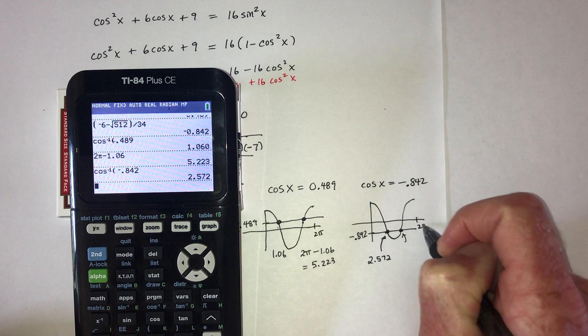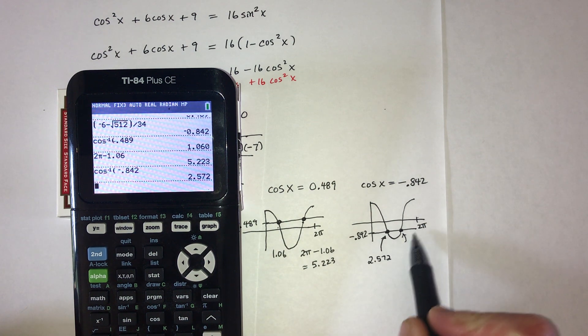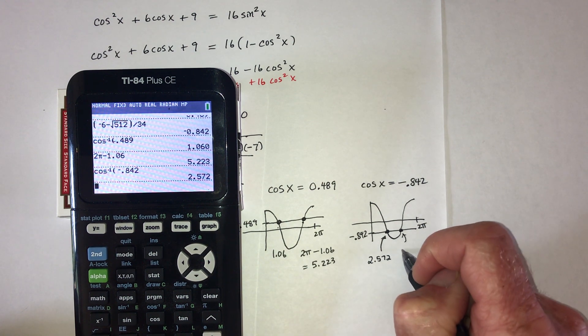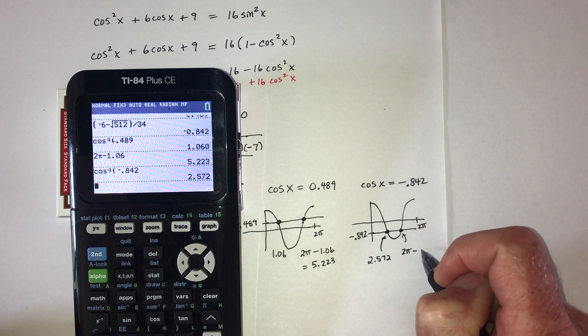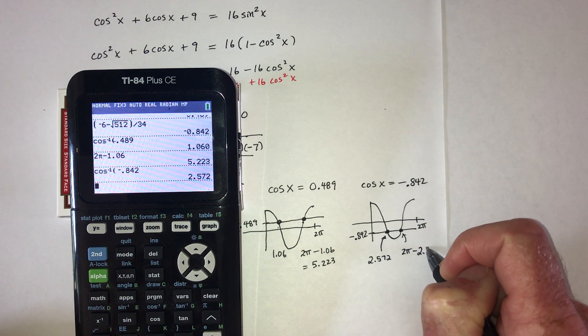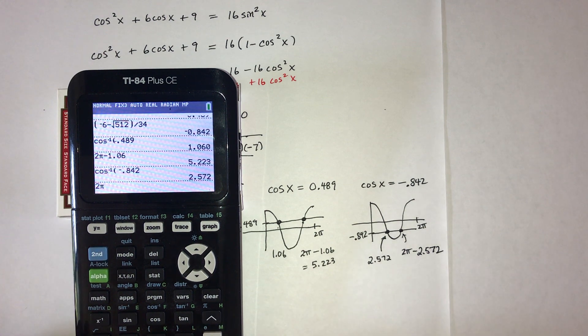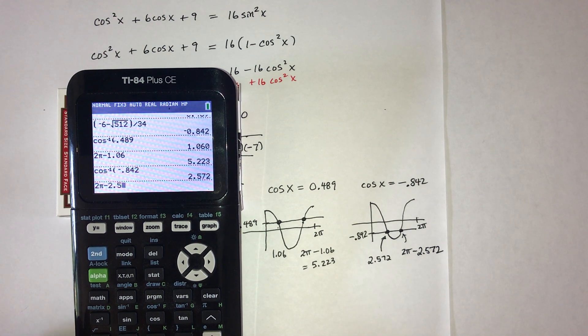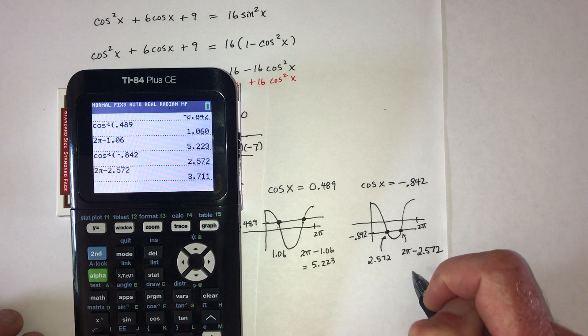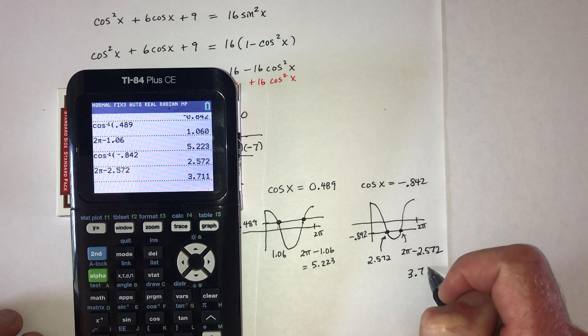And again, this would be 2 pi. So this one's to the left of 2 pi. So it'll be 2 pi minus 2.572. So 3.711.